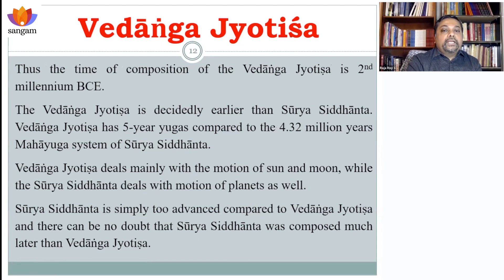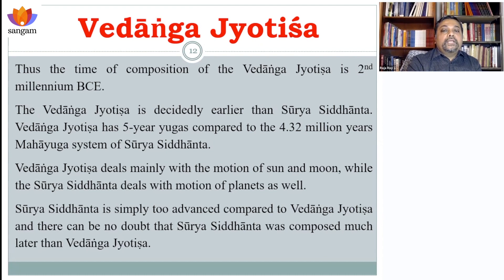Whatever the date — between 1180 to 1850 BCE — it is all later than 2000 BCE. If you look at Vedanga Jyotish and read Surya Siddhanta, you know that Surya Siddhanta is a much more complex text. Vedanga Jyotish only talks about the motion of sun and moon, while Surya Siddhanta has details of the planets and much more complex yuga systems. So there is no doubt that Surya Siddhanta was written much later than Vedanga Jyotish. It cannot be older than 2000 BCE, and really cannot be older than even 300 BCE.